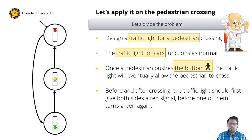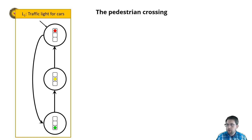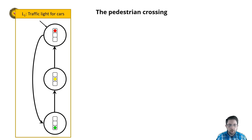The LTS for the cars is already given, so we can call that one L1 — traffic light for cars. Note that we still have to add a final state. Let's say we are happy when it is red, as then it is safe.